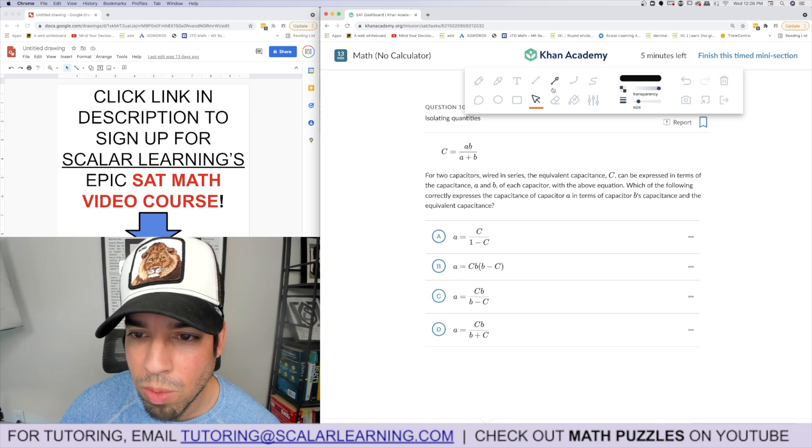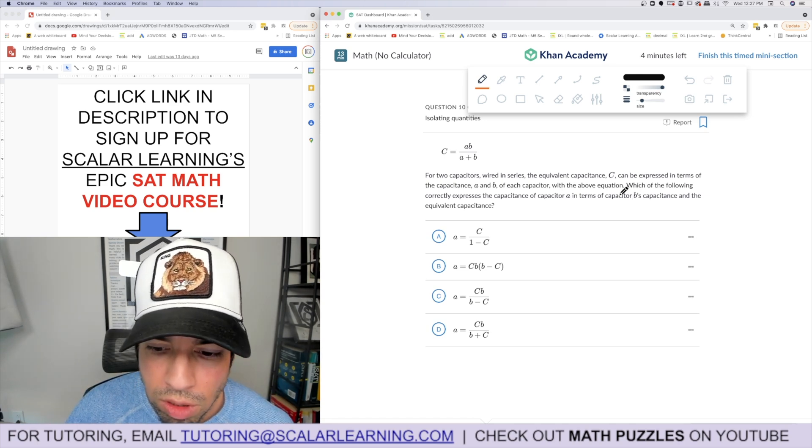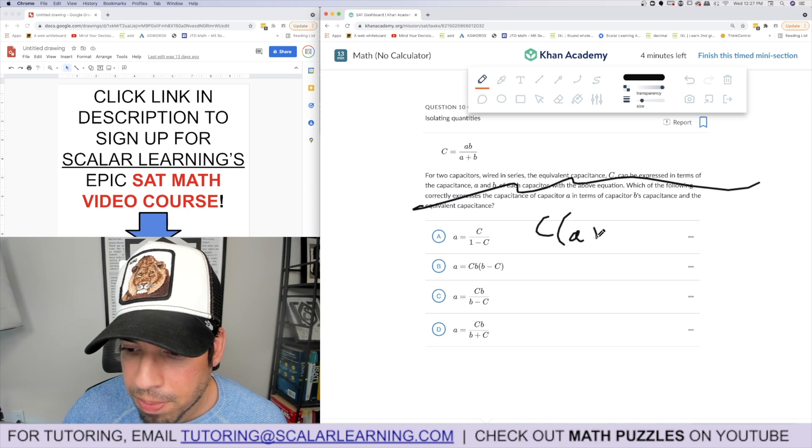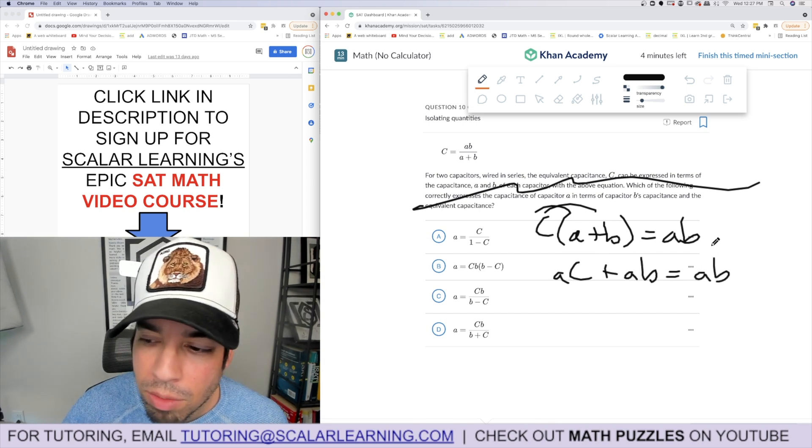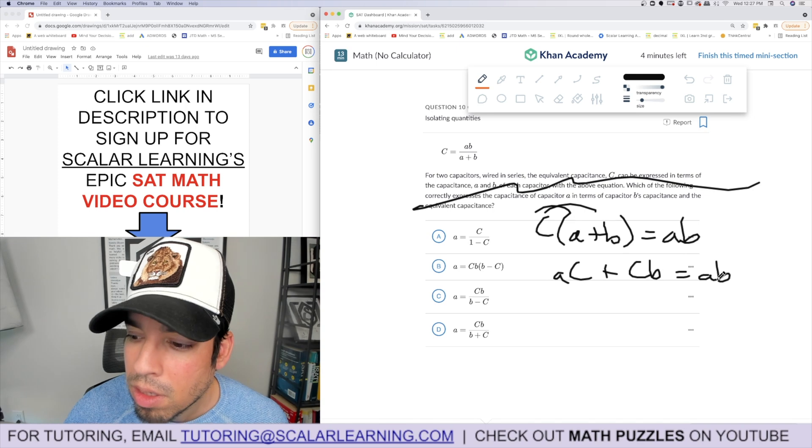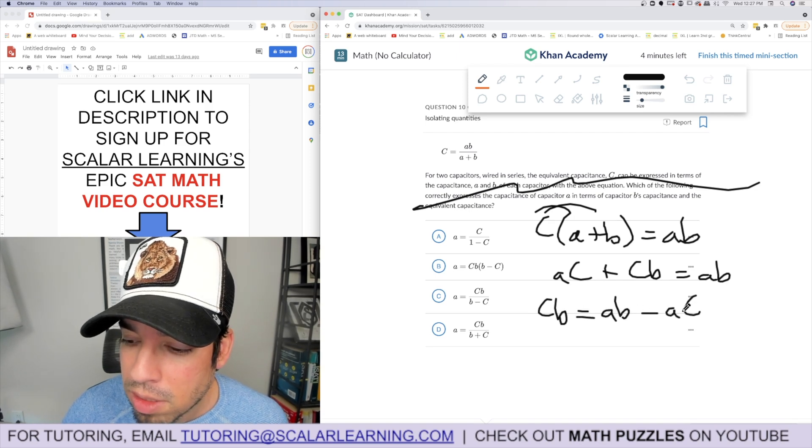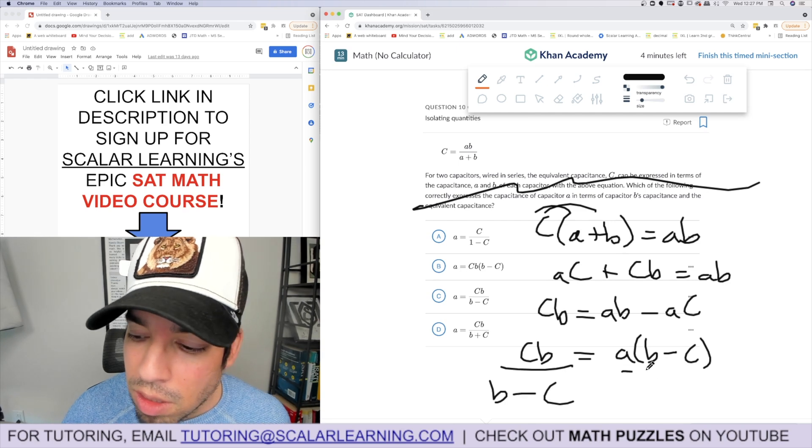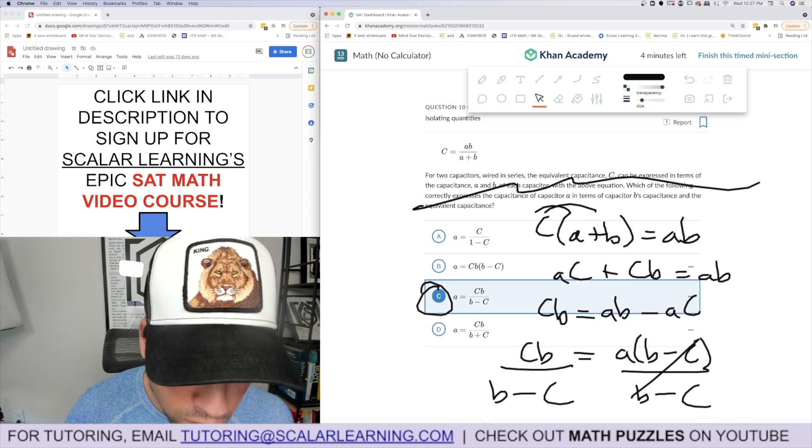10 of 10. How much time do we have? Five minutes. Okay, we're way better on time than I thought. For two capacitors wired in series, equivalent capacitance. Okay, this is an isolating quantities question. You're trying to isolate A. So I'm going to multiply both sides by A plus B equals AB. I'm going to distribute, distribute. AC plus AB equals... what? Oh, I messed up. Whoopsies. That's CB equals AB. Then I'm going to get the A's together, so I'm going to subtract AC. So I got CB equals AB minus AC. Then I'm going to factor out A. B minus C equals CB. And then I'm going to divide both sides by B minus C. A equals CB over B minus C. Boom, C. That's it.